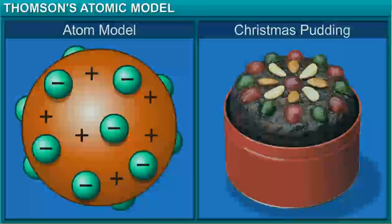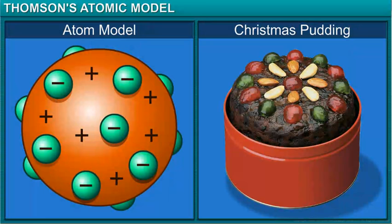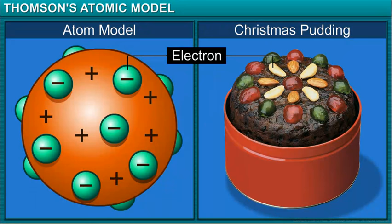In his model, Thomson compared an atom to a Christmas pudding. The electrons were like the raisins in the pudding and the pudding itself was like the positively charged particles.